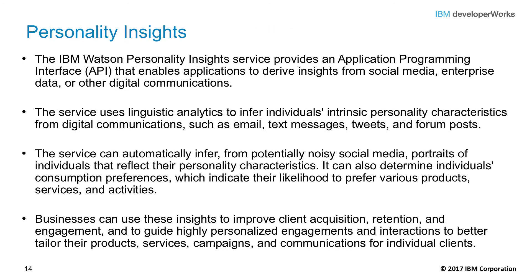The IBM Watson Personality Insights Service provides a REST API that enables applications to derive insights from social media, enterprise data, or other digital communications. The service uses linguistic analysis to infer individuals' intrinsic personality characteristics, including Big Five needs and values, from digital communications such as email, text messages, tweets, and forum posts. The service can automatically infer, from potentially noisy social media, portraits of individuals that reflect their personality characteristics. It can report consumption preferences based upon the results of this analysis, and for JSON content that is timestamped, it can also report temporal behavior. This service works best when given written input from an individual of significant volume — at least 1,200 words is recommended.